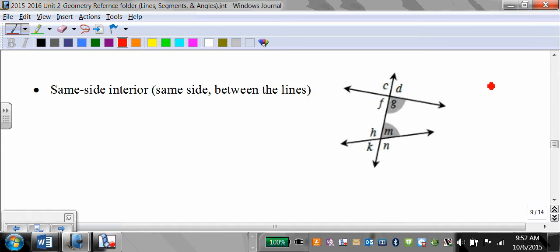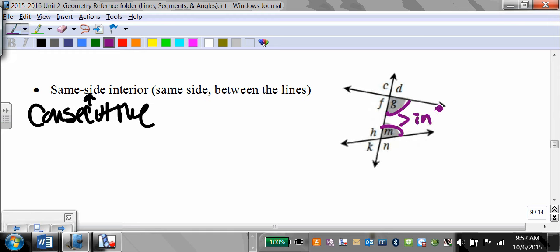Last one is, in the video I call this consecutive interior. That is interchangeable with same-side interior. You're on the same side of the stir stick inside the lines, same side. I give one, you give the other. G and? F and? Bingo.